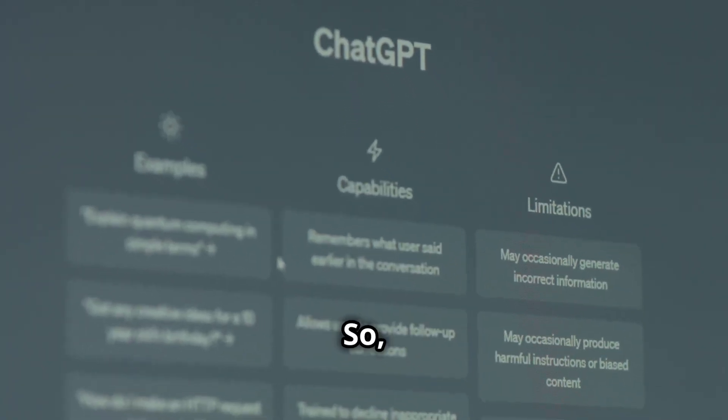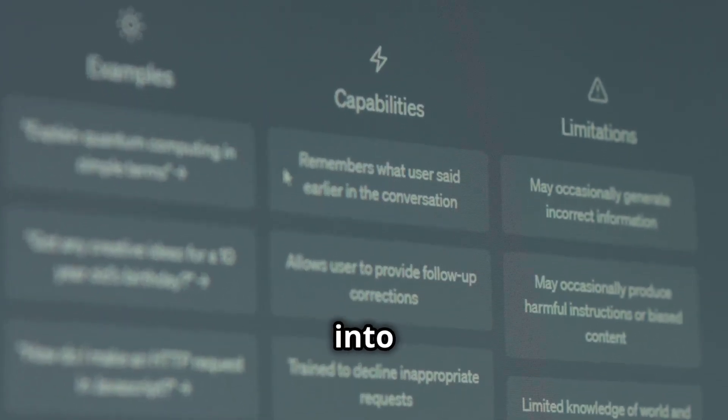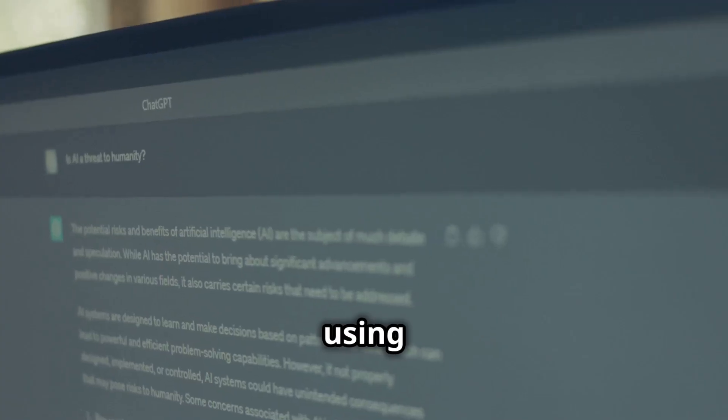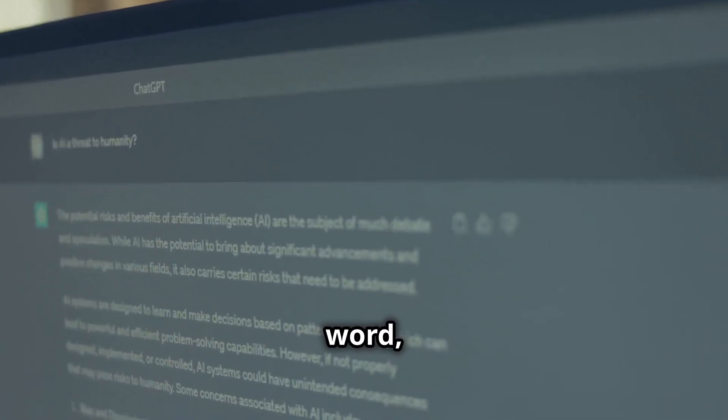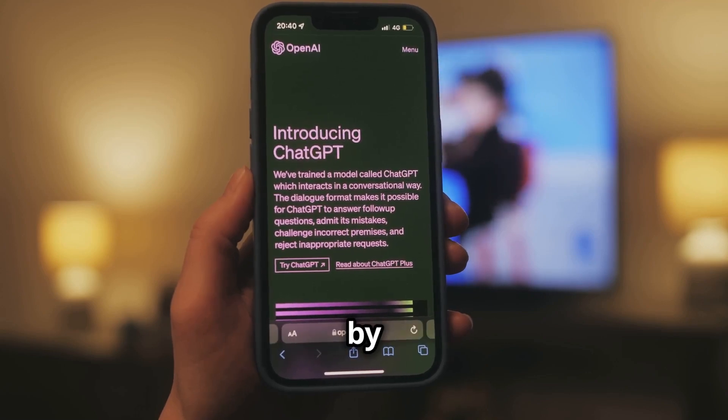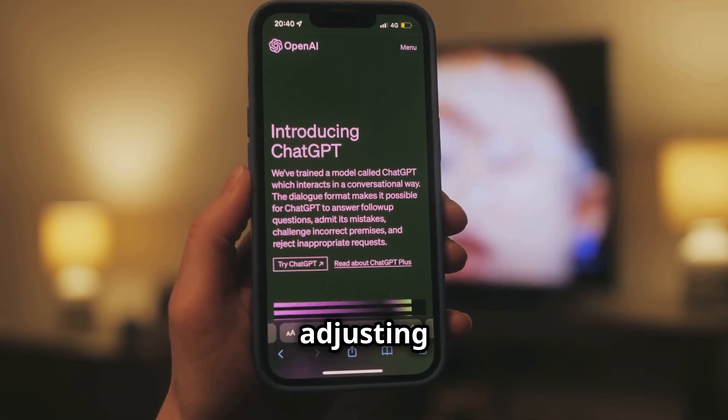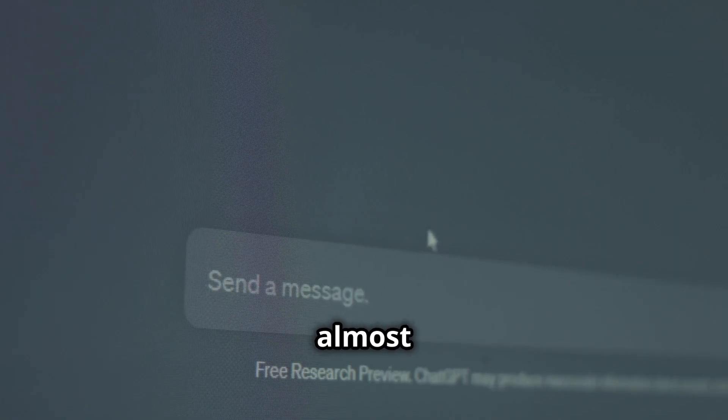Eight, how it all comes together. So, to sum it all up, ChatGPT reads your input, breaks it into tokens, and analyzes them using its training. It predicts and generates a response word by word, based on probabilities and patterns. It keeps the conversation coherent by remembering context and adjusting its tone to match your style. The result? A tool that feels almost like talking to a human. Pretty amazing, right?